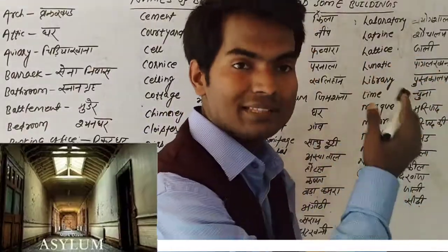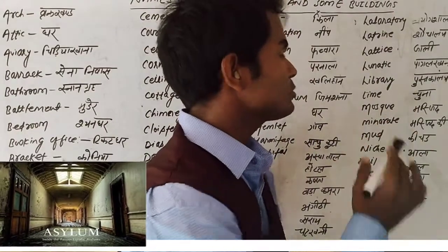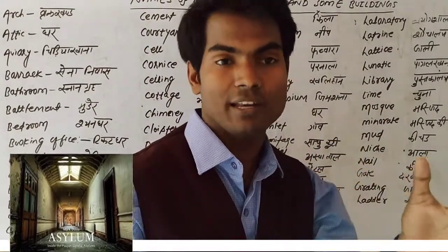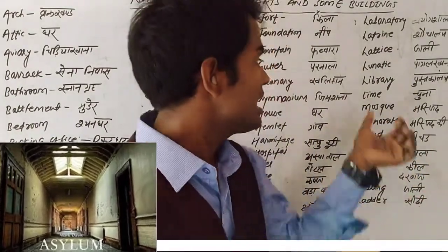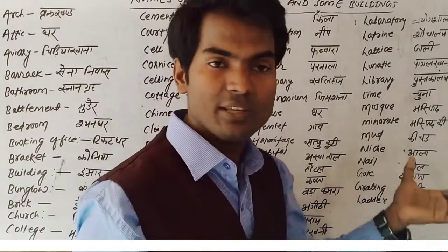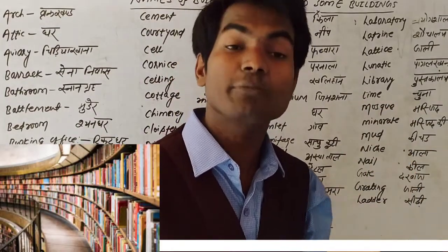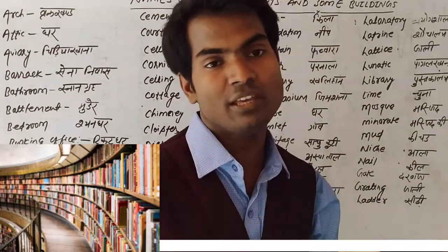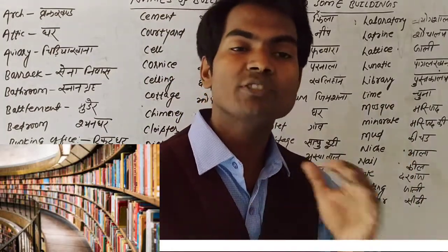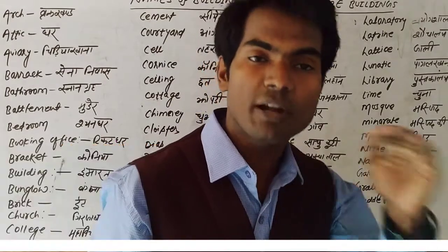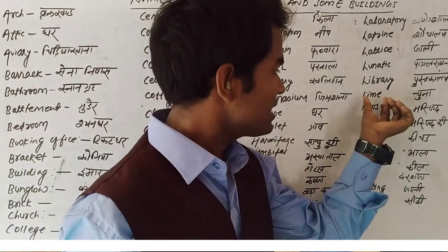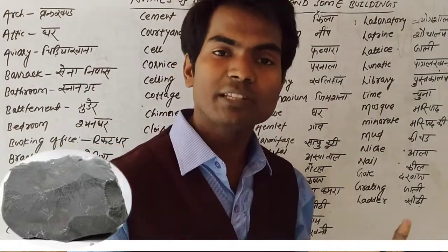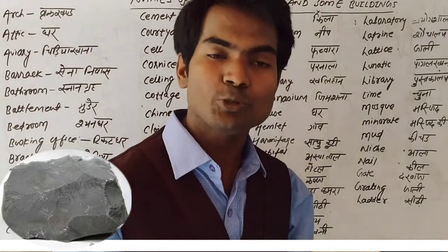Lunatic asylum — lunatic ka matlab hota 'paagal,' asylum means 'paagal khana.' Library — library ka matlab hota 'pustakalaya,' jahan pe bahut saari pustakon ka bhandar hota hai. Lime — lime ka matlab hota hai 'chuna.'